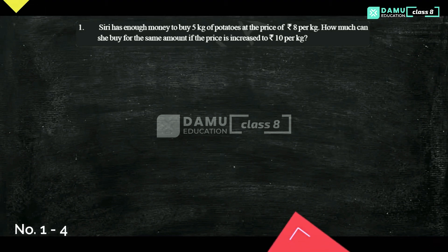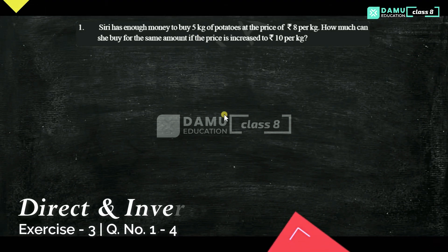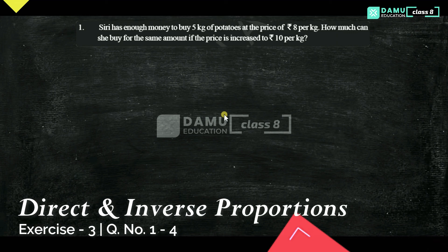Hello viewers, thanks for watching our videos. If not yet subscribed, please subscribe and click the bell icon. In this module, we are going to start our first question in the third exercise. Siri has enough money to buy 5 kg of potatoes at the price of 8 rupees per kg. How much can she buy for the same amount if the price is increased to 10 rupees per kg?